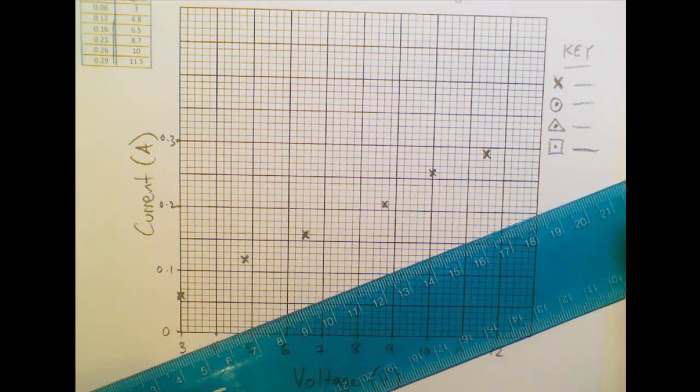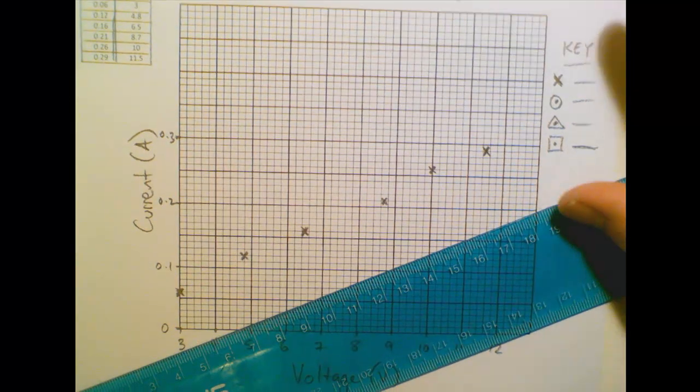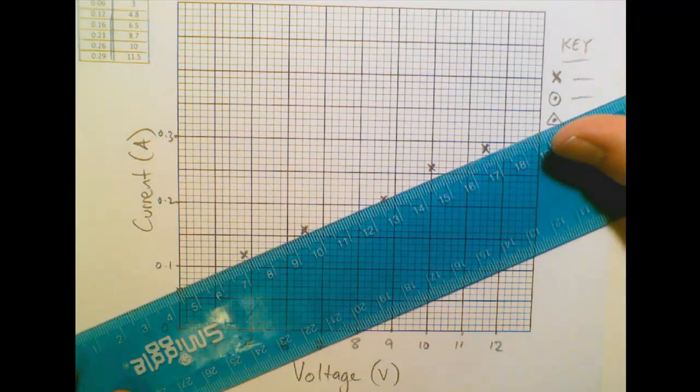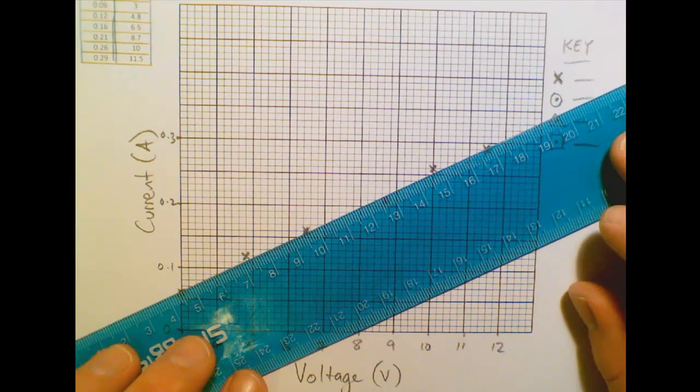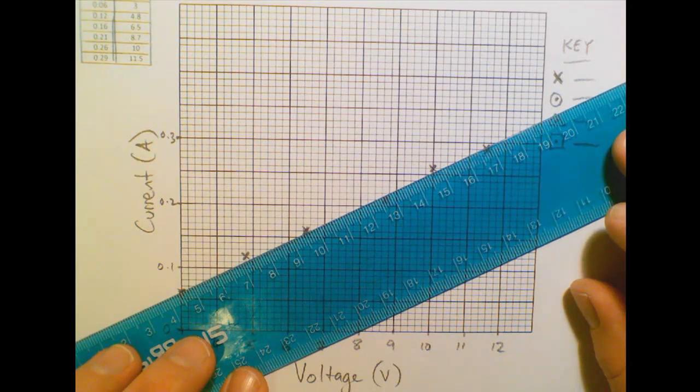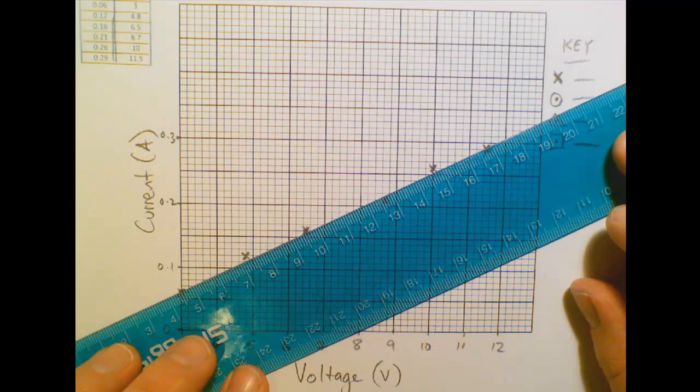So what I'm going to do now is draw a line of best fit. And remember that a line of best fit is a graphical average of the points. And in this case, it looks like a nice straight line. And what you've got to do is get an equal number of points either side of the line. So I've got 6 points here. I'm going to try and draw a line that's got 3 on one side and 3 on the other.